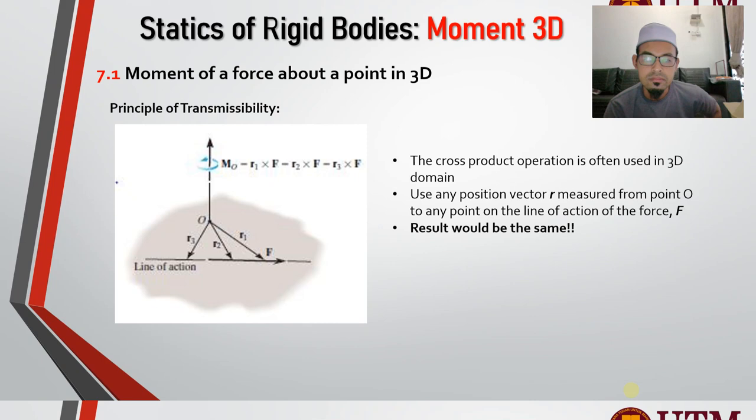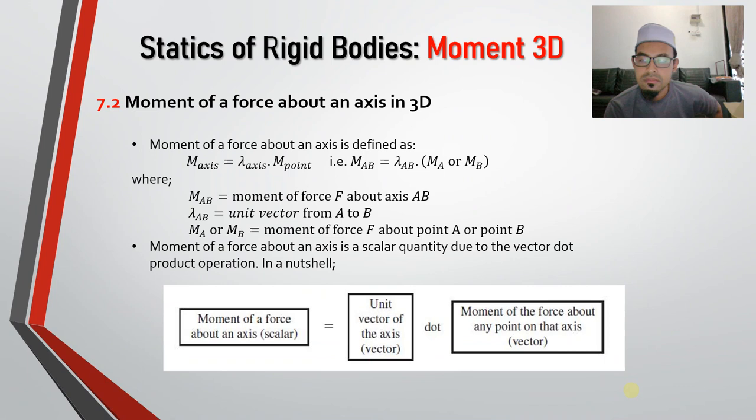Where is it? Here we are. So moment about axis, that one is not much difficult. Okay, what the thing that you must know is the formula. Moment about axis, look at this one. Moment about axis equals lambda axis dot and point.